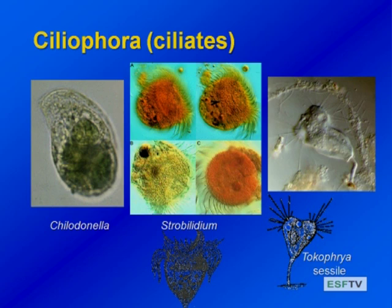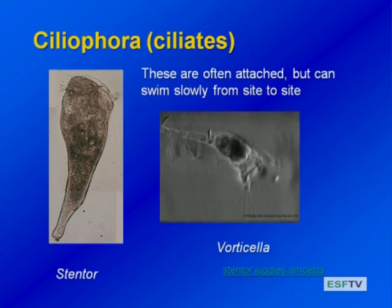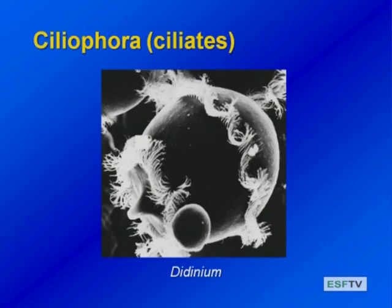Here are some other ciliates. They don't all look like paramecium. Some have cilia that are in bands; some are attached to surfaces. This one is attached to a lake snow detrital particle floating in the water. They can swim slowly from site to site even if attached. If you follow the link on the Blackboard site, you'll see a video of the ciliate Stentor juggling an amoeba as it consumes it. Here's another common ciliate, Didinium, with two layers of cilia — a nice electron micrograph.